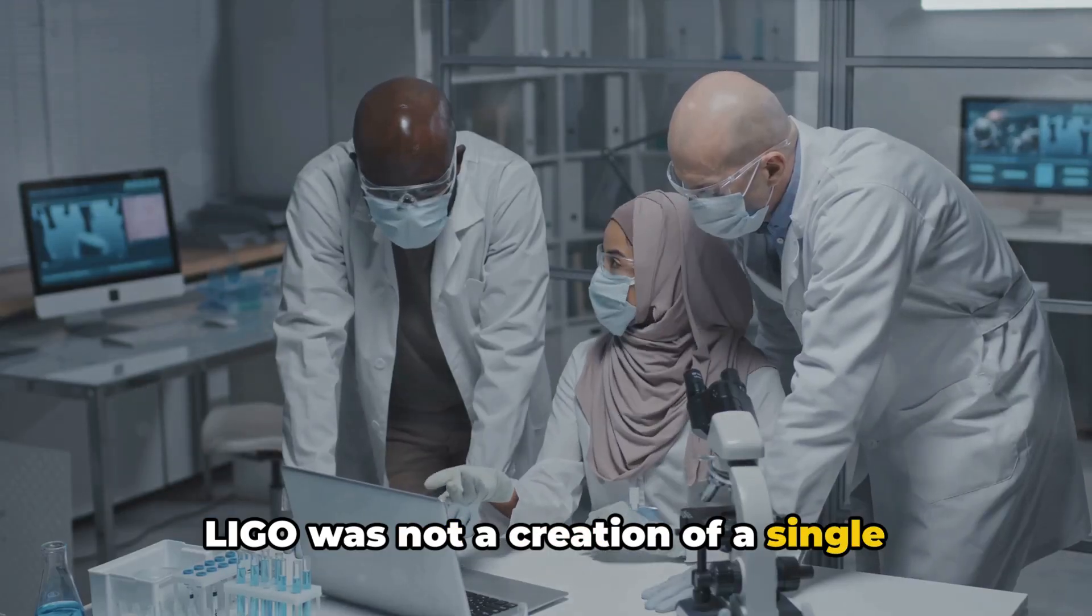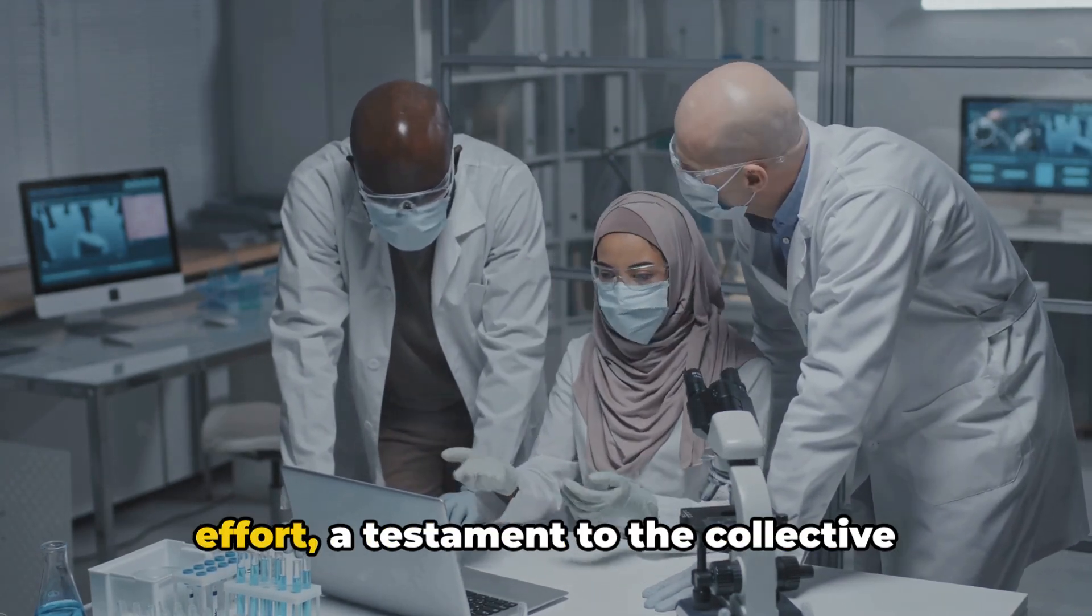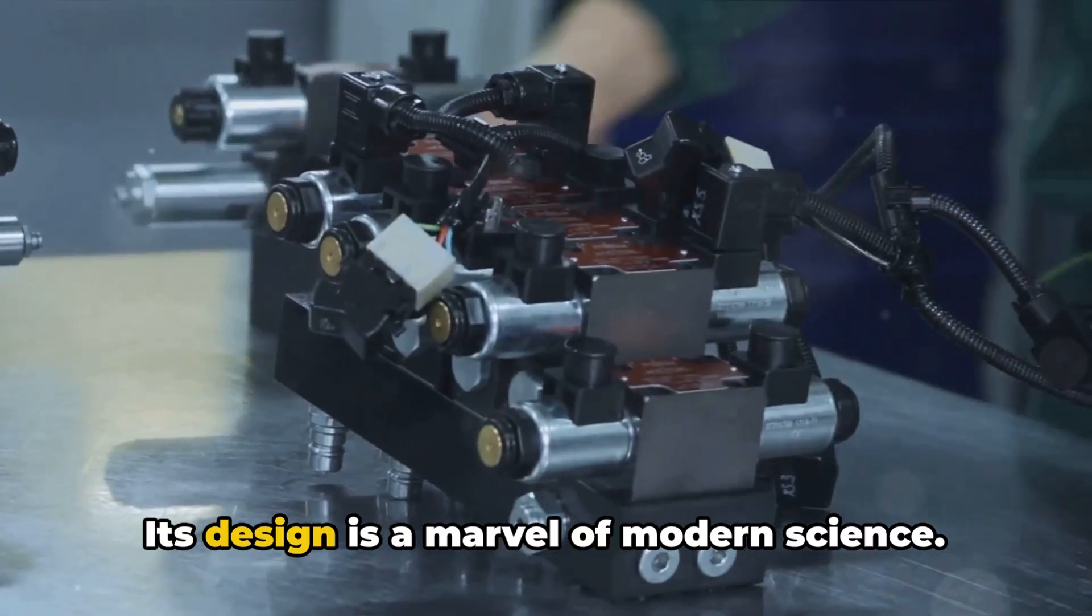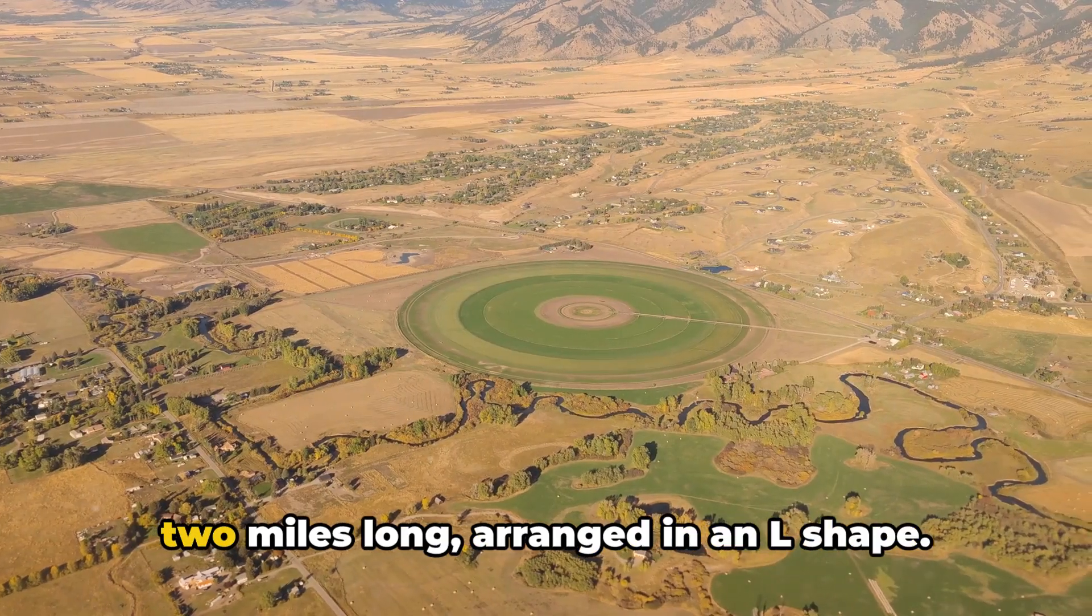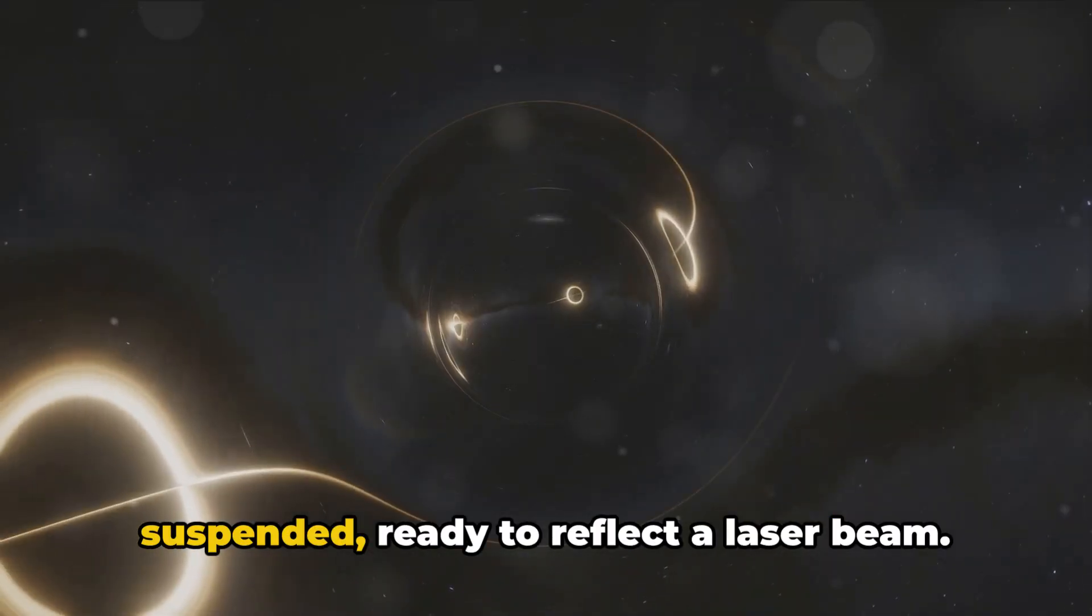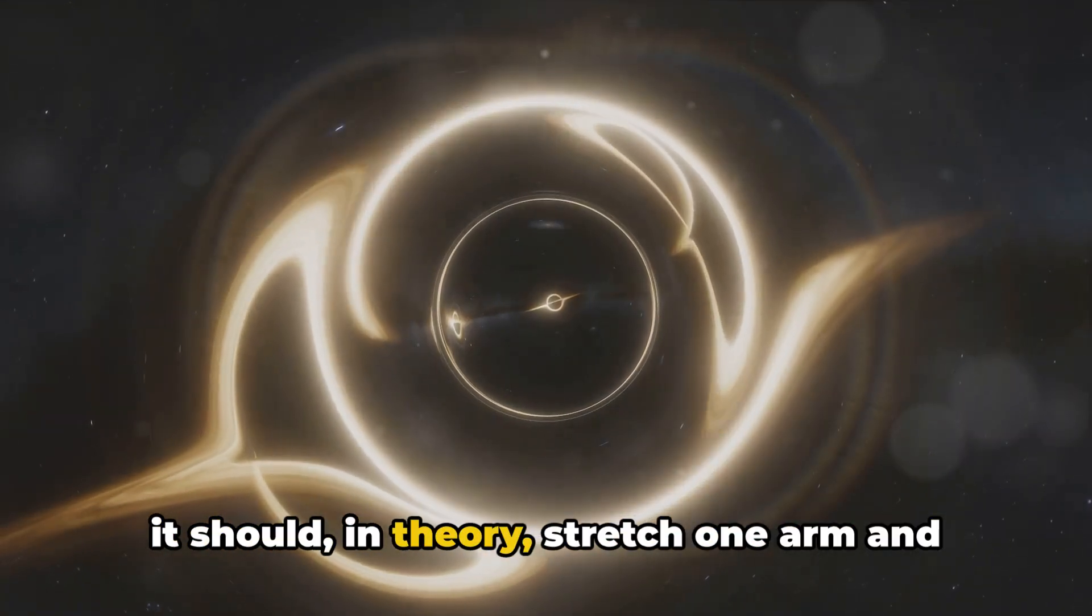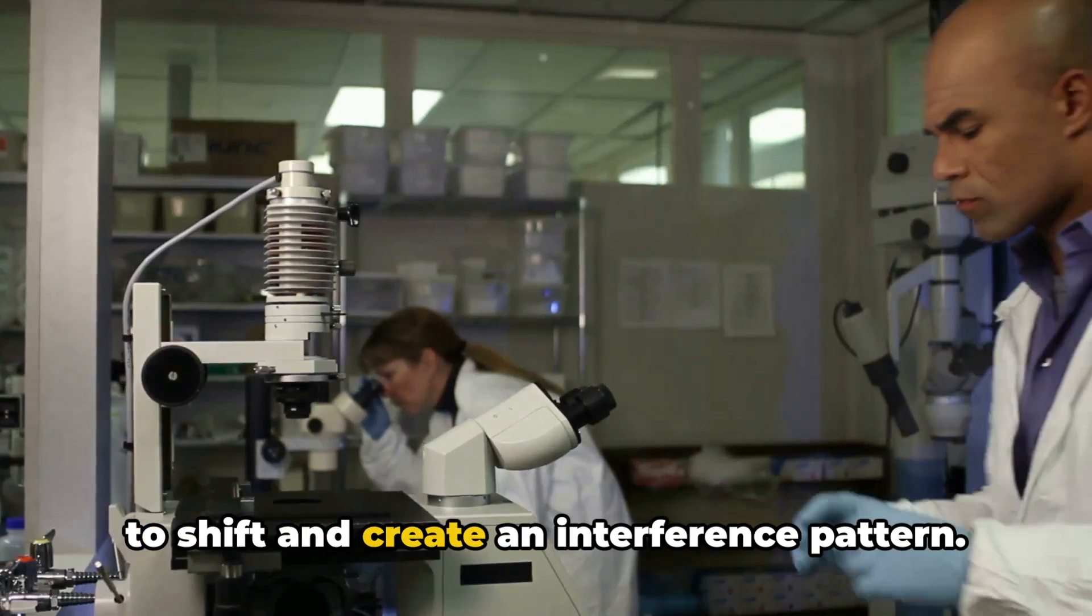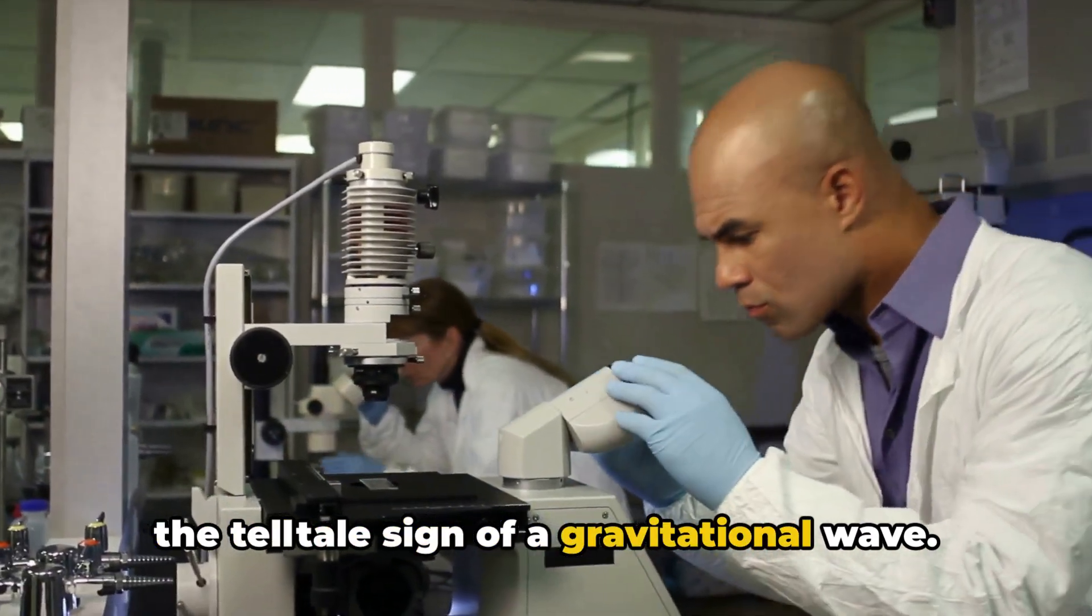LIGO was not a creation of a single moment of inspiration. It was the product of years of tireless effort, a testament to the collective genius of scientists from around the globe. Its design is a marvel of modern science. Imagine two arms, each stretching over two miles long, arranged in an L shape. At the end of each arm, a mirror hangs suspended, ready to reflect a laser beam. When a gravitational wave passes through, it should, in theory, stretch one arm and compress the other, causing the laser beam to shift and create an interference pattern. This change, though minuscule, would be the telltale sign of a gravitational wave.